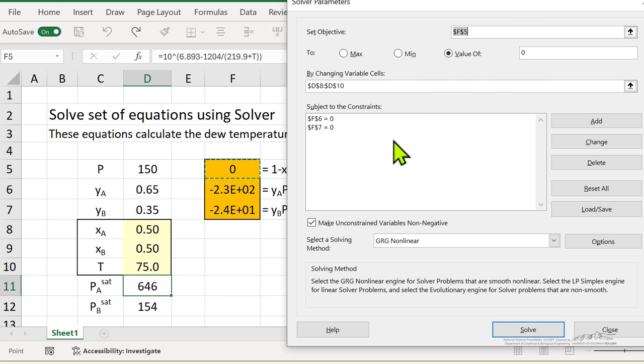We have of course two other equations, we're going to use them, write them as constraints, so F6 is zero, and F7 is zero, and we're changing cells D8 to D10, which are these yellow cells.